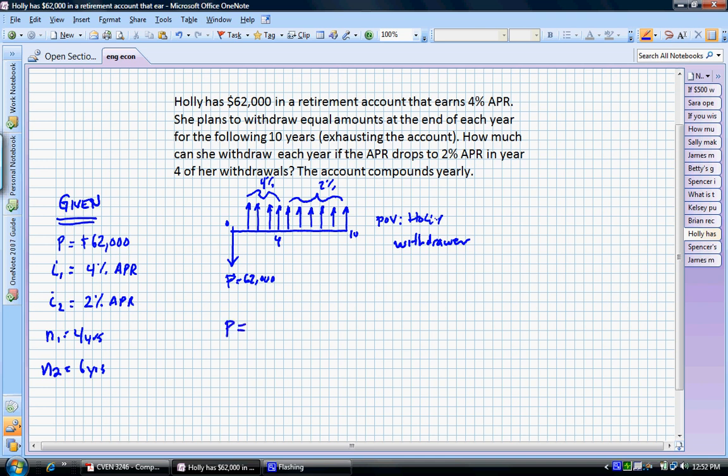So let's try that. We have P is equal to A - this is our initial series of payments, and A is unknown. We're going to use the factor and convert that back to present value. P/A at 4%, and we have invested that for four years. We are going to add that amount to A, again, the series occurring over the next six years, multiplied by the P/A factor, 4%, and six years.